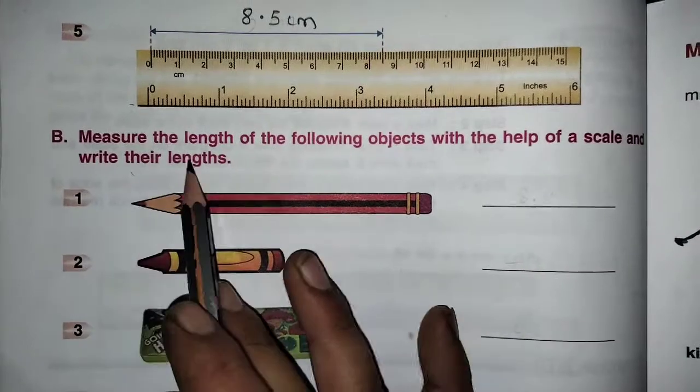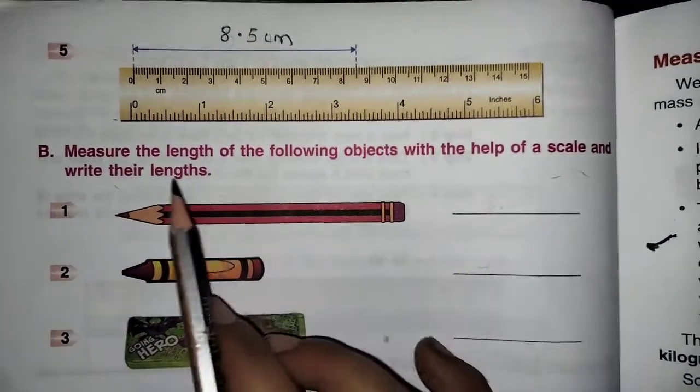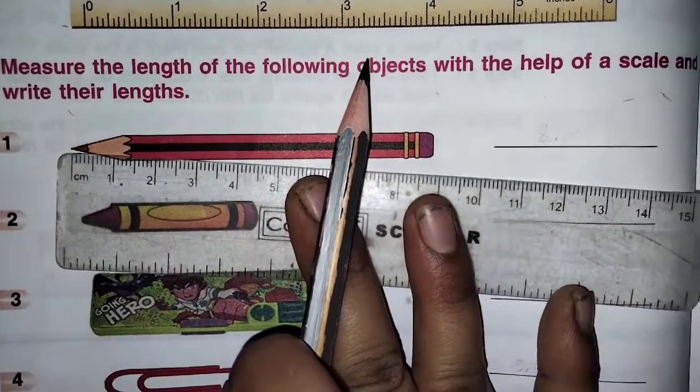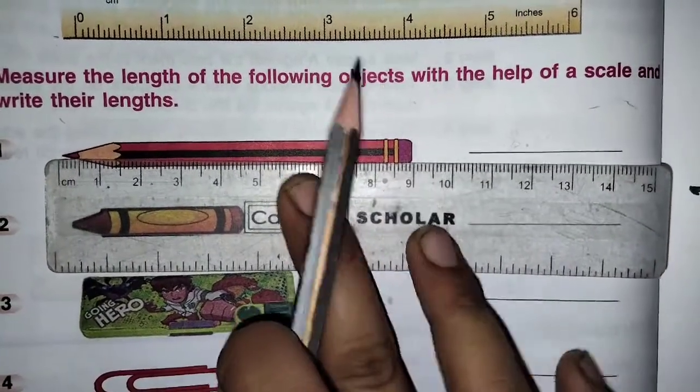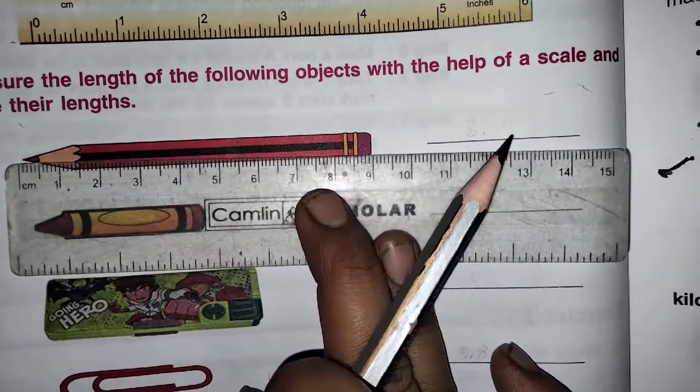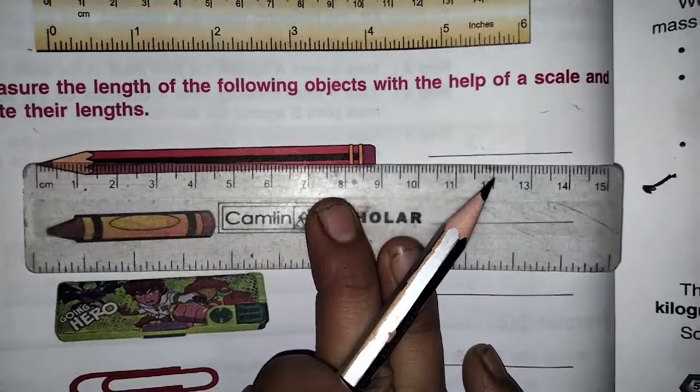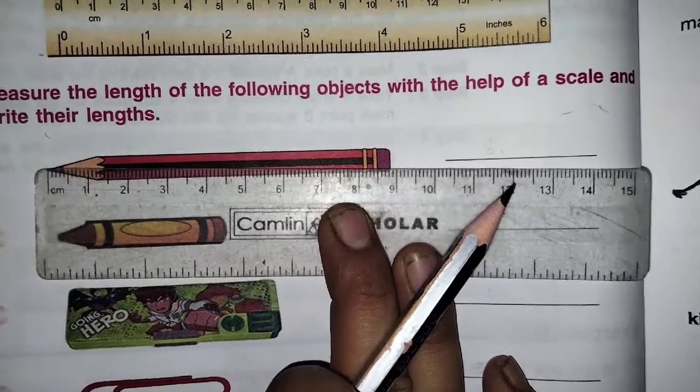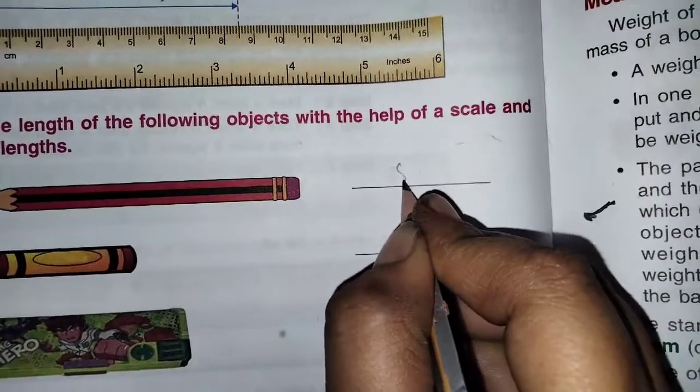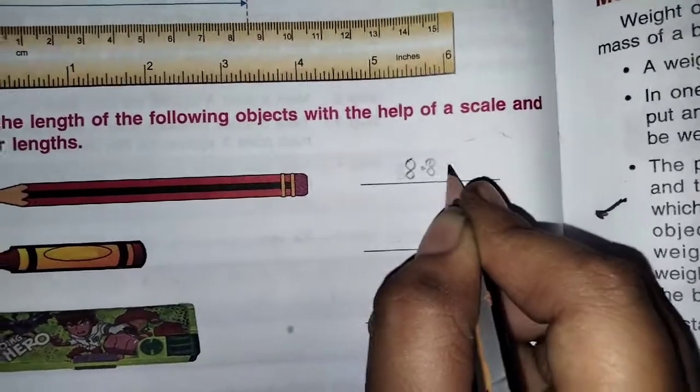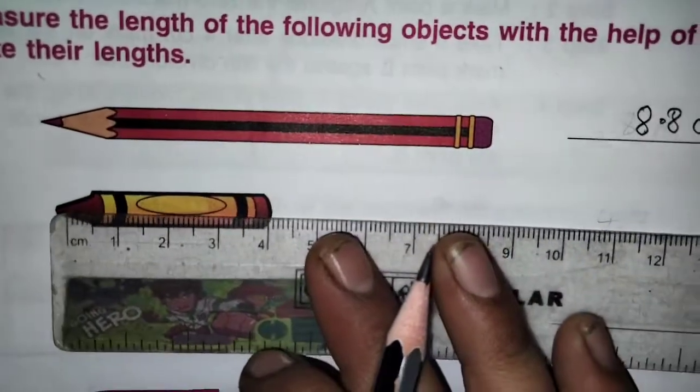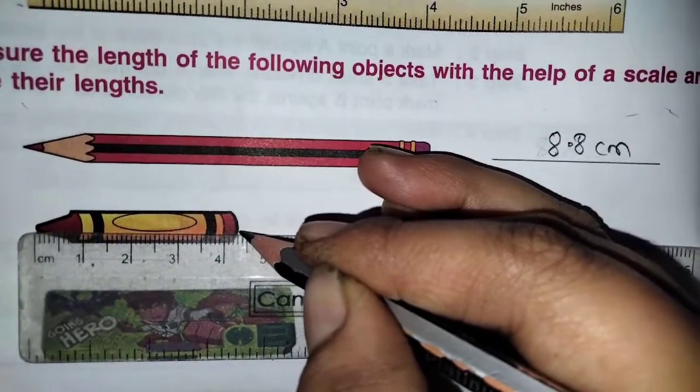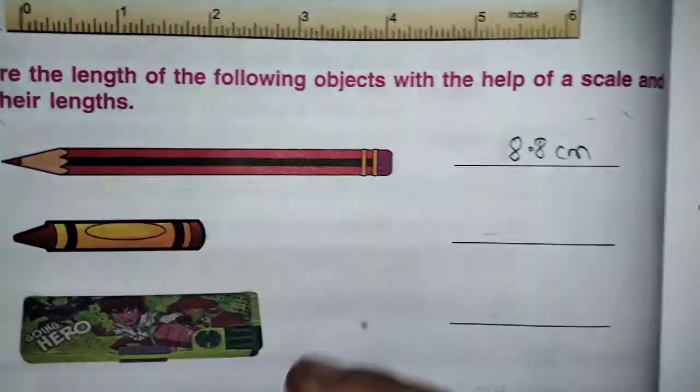Now next one, measure the length of the following objects with the help of the scale and write their lengths. You have to measure this length. One end here and one end will be this side. Then it is 8.8 cm. Now next, you can see children, one end is here, one end is here. After 4, how many lines they used? 3 lines, 4.3.